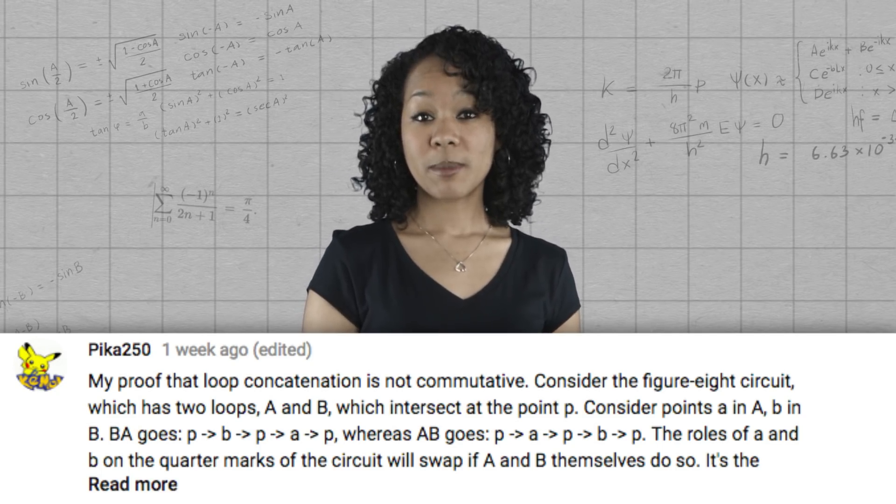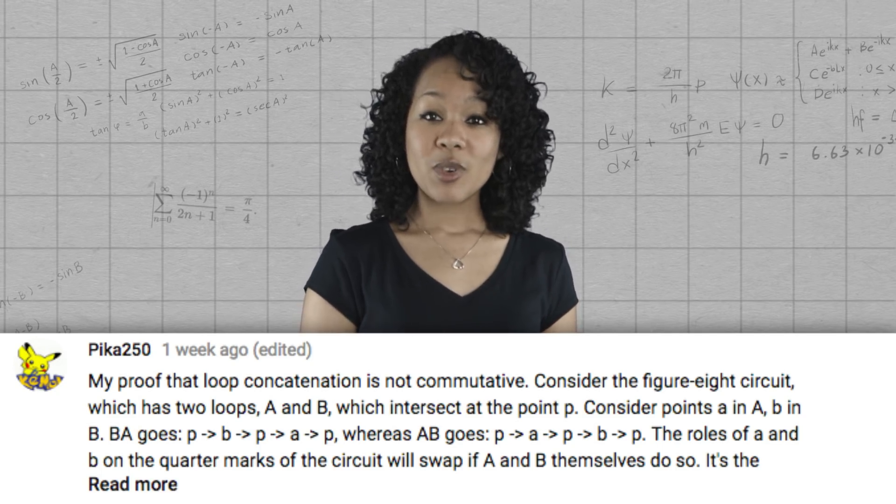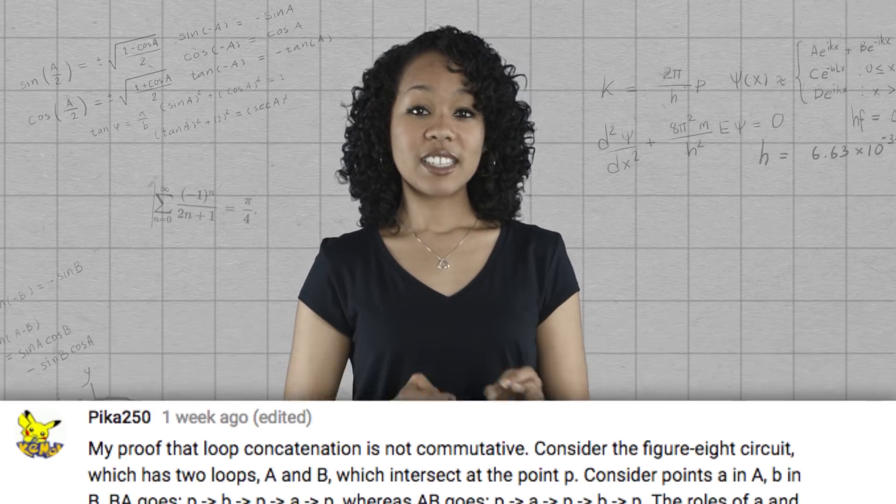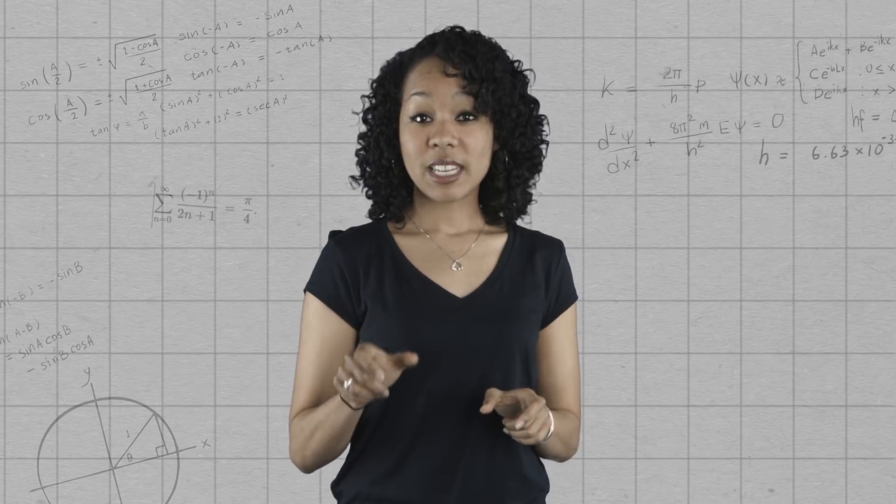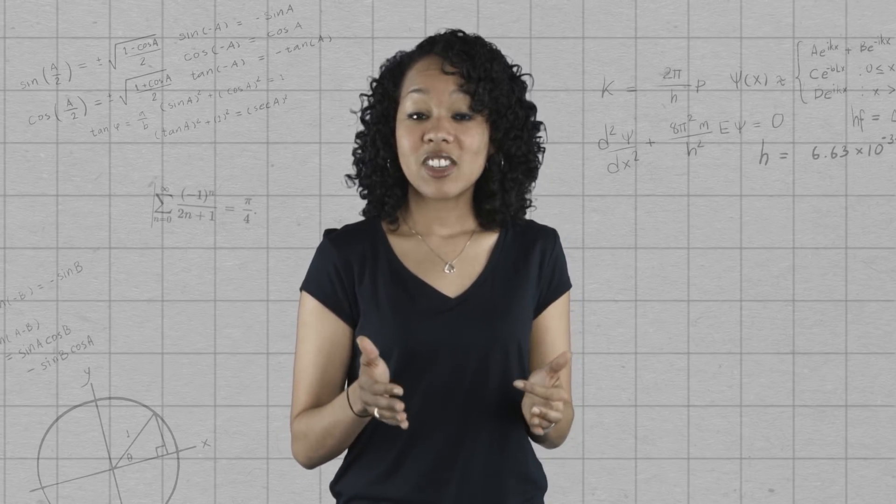But in B times A, the blue car starts driving first, then the red goes. Since these aren't the same, A times B is not equal to B times A. And so loop concatenation is not commutative.